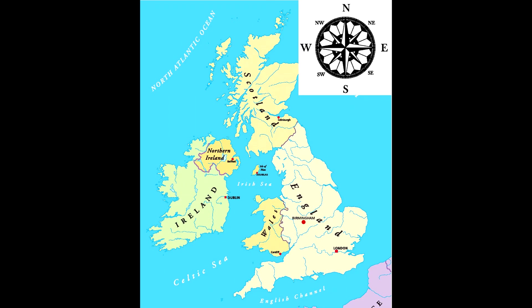Another use is describing direction of travel. This is what is known as compass bearings. If you were travelling from London to Birmingham, your compass bearing would be in a north-westerly direction. If you were travelling from Birmingham to Cardiff, you'd be travelling in a south-westerly direction.